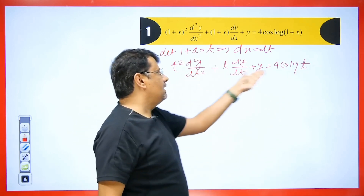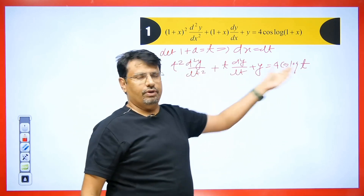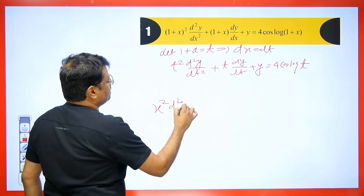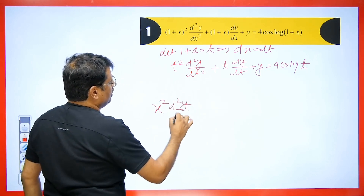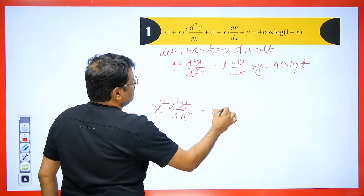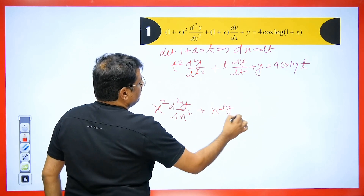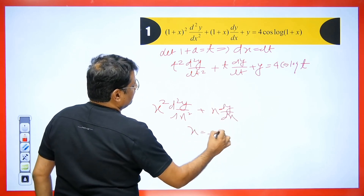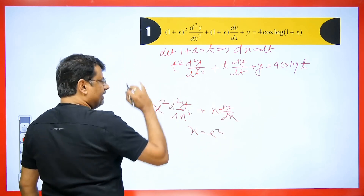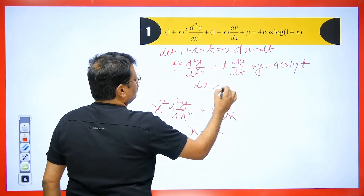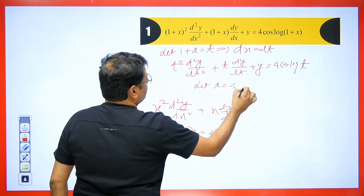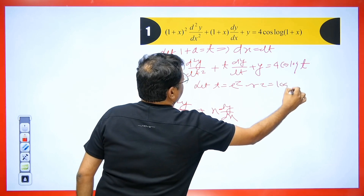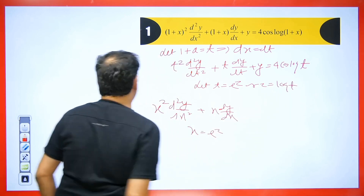You can see that we get a homogeneous equation in t. If we had an equation homogeneous in x, remember if we had this type of equation with x dy/dx, we take x = e^z. Here it is t, so we let t = e^z, which gives z = log t. Hence, this is what you need to understand well.